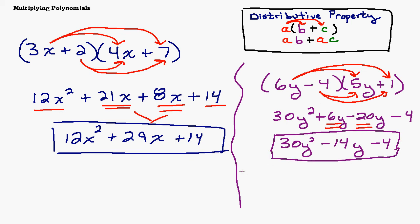This binomial times binomial process is going to come up a lot, and later you'll likely be asked to undo it — which is more difficult. You'll be given something like 30y squared minus 14y minus 4 and asked to find what two binomials multiplied together to give it. That reverse process is called factoring. Being proficient at multiplying binomials is the key to success at factoring later on.